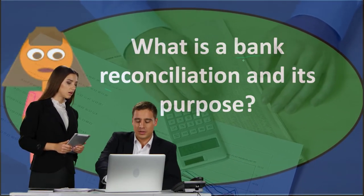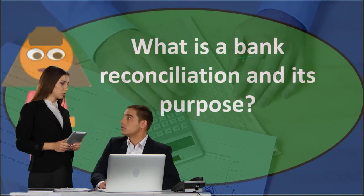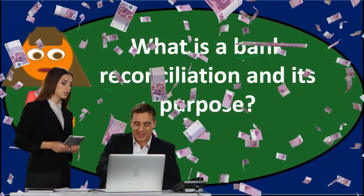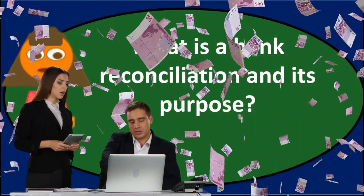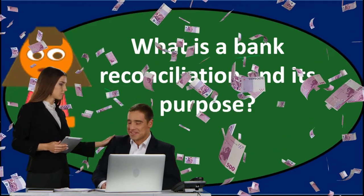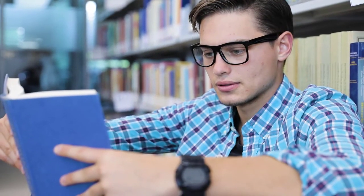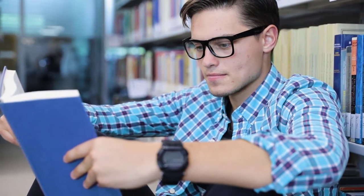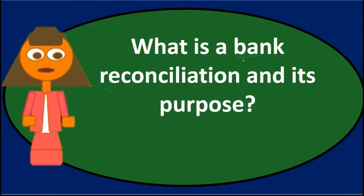Once we can reconcile the bank balance as of November 30th to our book balance, we can be pretty certain everything in our system is correct and verified by the third party. The bank reconciliation can help find errors on the bank side, but the main purpose is to reconcile our books — making sure our records are correct by double-checking against the typically very accurate third-party source.